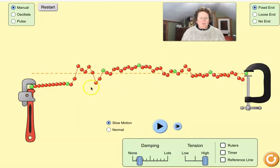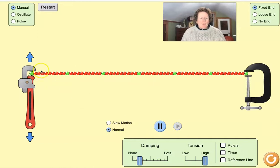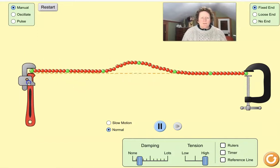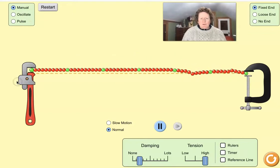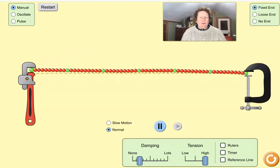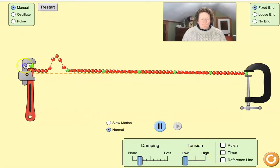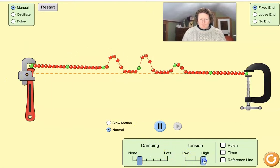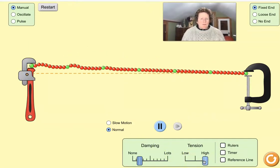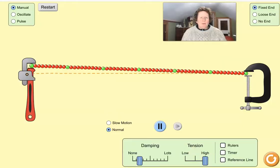If the person generates another pulse like the one up here but moves his hand further, the pulse would be what? Well, you can try that. If you can try a small pulse and then you can try a larger pulse and see what goes on. If the person generates another pulse like the first, but the rope is tightened, well, you can go over here and try loose and then you can try tight and see what happens.